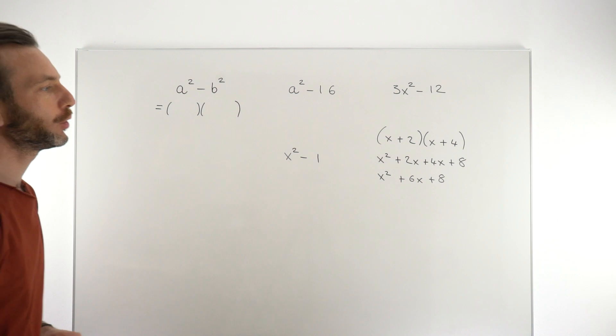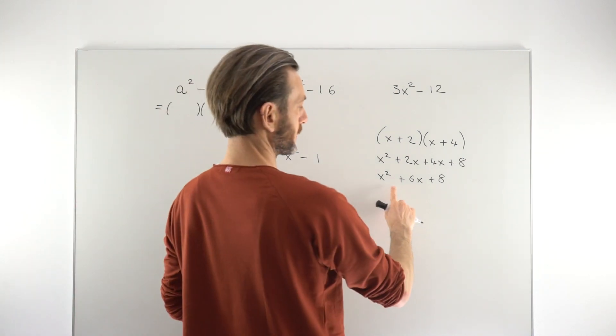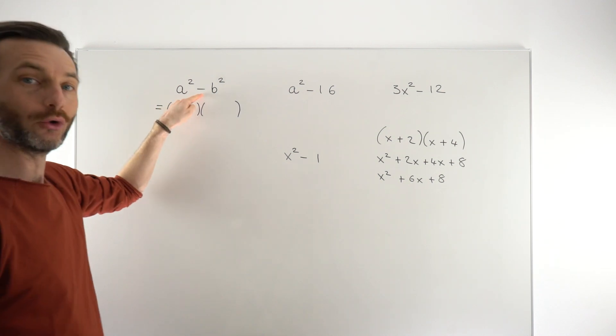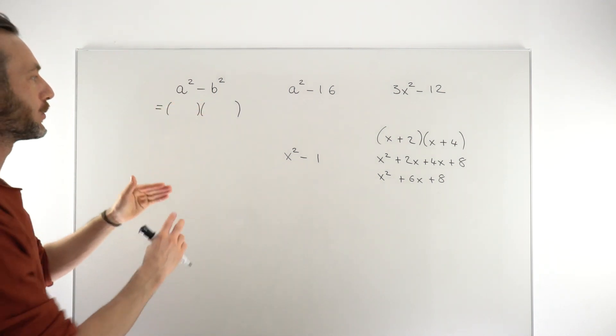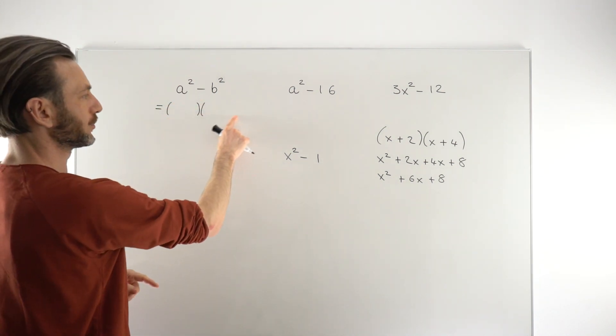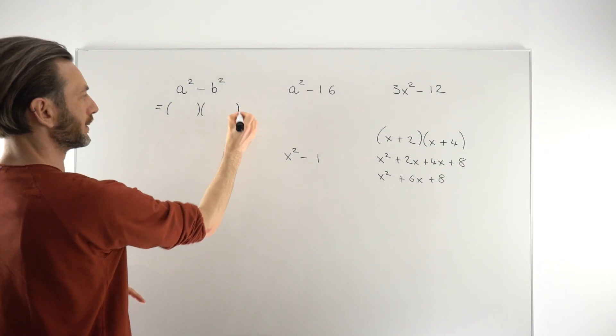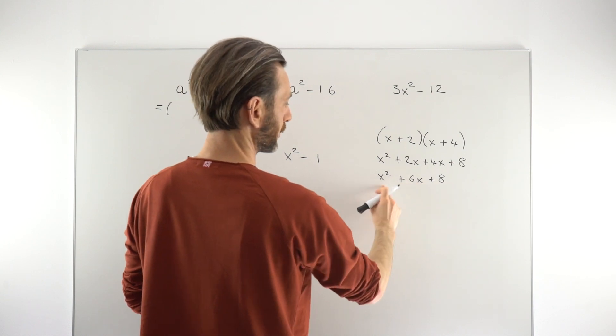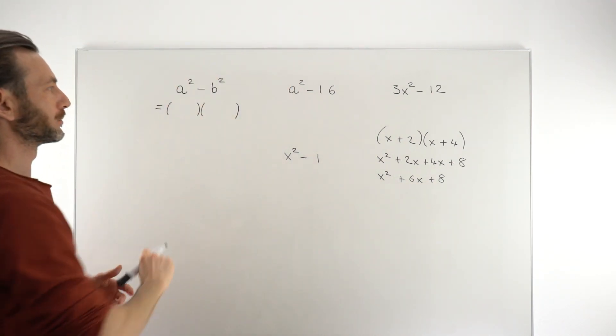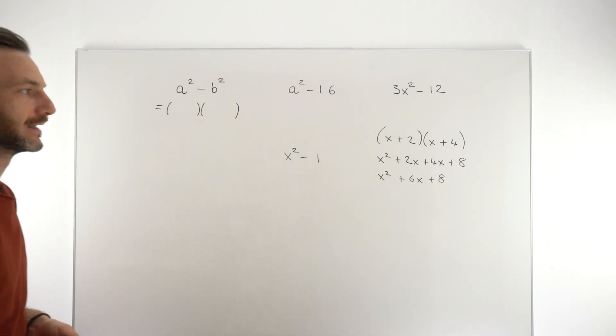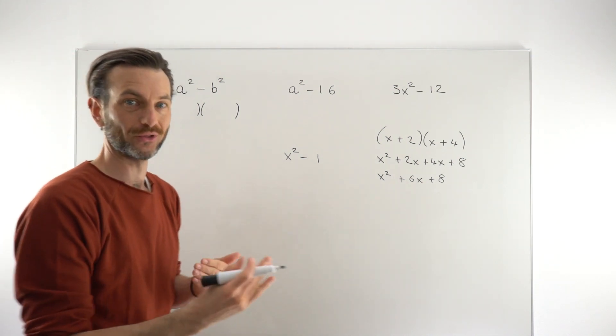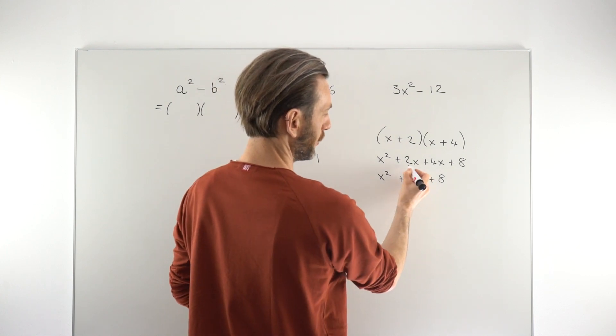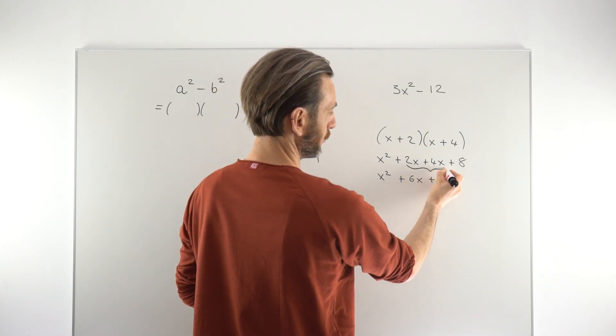But once you've multiplied those brackets out you end up with three terms. But notice that this guy here has only got two terms. So somehow the format of the brackets has to allow that when we multiply it out we don't get three terms but only two. The only way that can happen is if some of the terms cancel each other out.